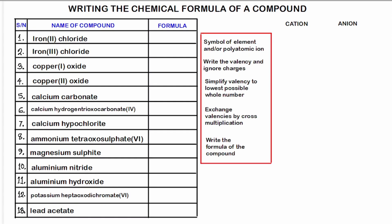The simple steps to follow are carefully outlined in the red box. We will apply these steps to write the chemical formula of 13 named compounds. Without further ado, let's begin.